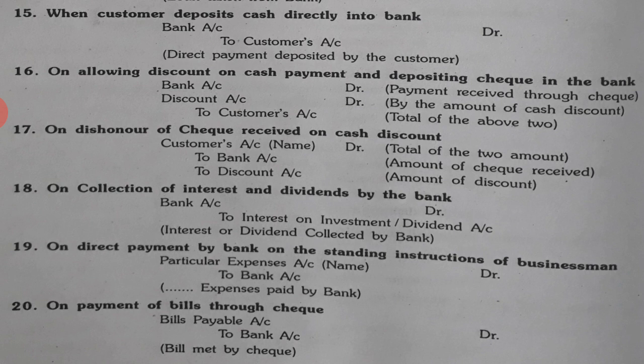15th entry: if a customer directly sent money to your bank account via UPI, Paytm, BHIM app or any app, bank is the receiver, so bank account is debited and customer account is credited. 16th: if discount was allowed on cash payment and check was deposited in bank — bank is receiver so it is debited, discount is a business expense so it is also debited, and customer account is credited.